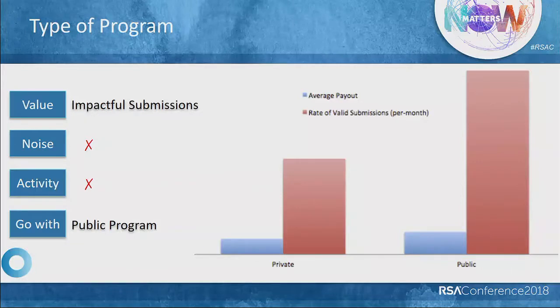Valid submissions are not always true value, because you can have a lot of valid submissions that are low severity. Maybe what you are looking for is impactful submissions, and the biggest indicator of impact is the amount of money you are paying out. Comparing average submissions per month — both valid and total — with the average payouts we were giving out, we saw a lot more impactful submissions in the public program than in the private program. It is important to keep all of these factors in mind when thinking about what type of program to go for.